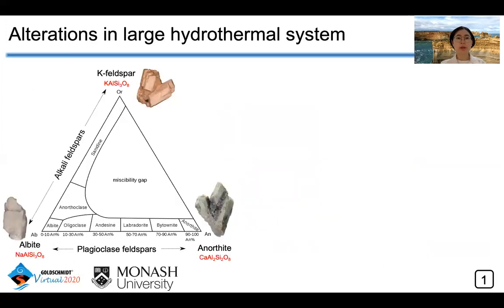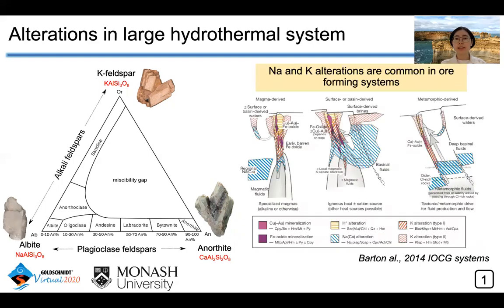Since feldspar makes up more than 50% of the Earth's crust, it is the most common mineral that can undergo sodic alteration to form albite, or potassium alteration to form K-feldspar. Sequential sodic and potassium alterations are common features in ore-forming systems such as IOCG deposits or porphyry deposits. IOCG deposits are characterized by deep sodic and shallow potassic alterations.